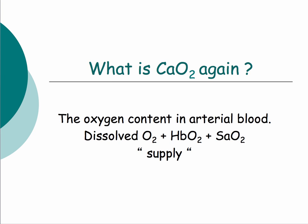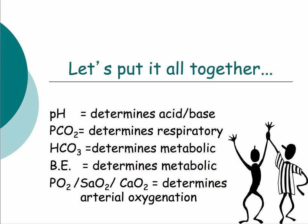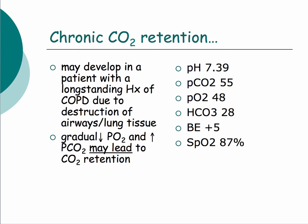CaO2 is oxygen content — a way of standardizing arterial oxygen saturation and dissolved oxygen in the blood combined with hemoglobin levels, giving you total oxygen available. Now putting it all together: pH determines acid-base, pCO2 determines the respiratory portion, bicarb and base excess determine the metabolic portion. We'll go through some examples. The first is chronic CO2 retention — a very common hospital scenario.